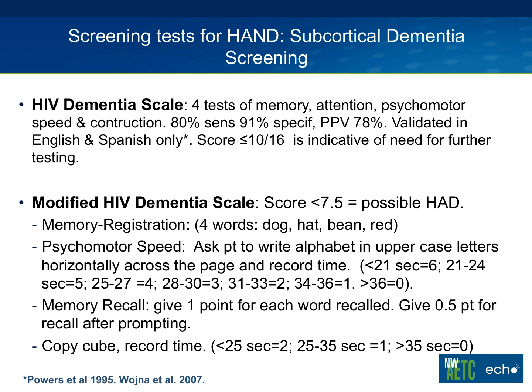Prompting is done by giving category cues: an animal — dog; a piece of clothing — hat; a vegetable — bean; a color — red. Half a point is given if they recall after prompting. Then have them copy a cube, recorded in under 25 seconds for a full score. The full score is 12, and anything less than 7.5 indicates possible HIV-associated dementia.